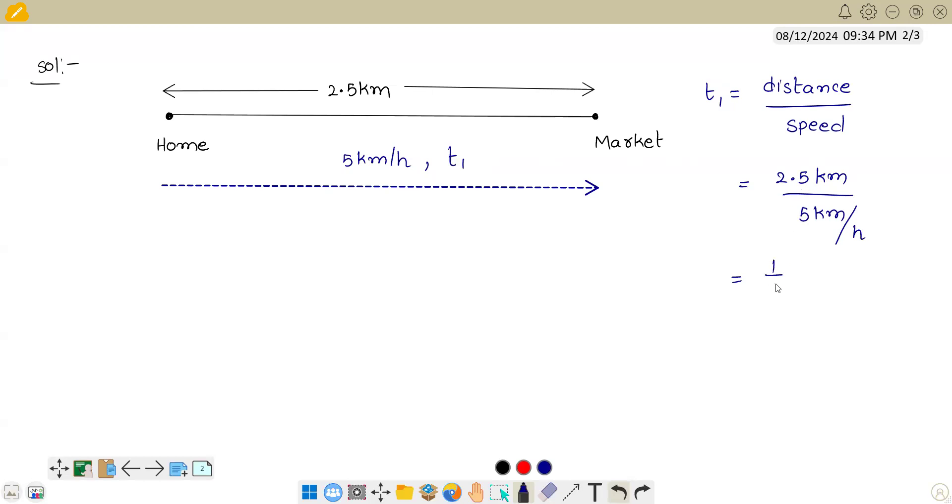So we will get 2.5 divided by 5. Kilometer would cancel, you will get 1/2 hour. 1/2 hour means 60 minutes, so 1/2 into 60 minutes, we finally get this as 30 minutes. We got the value of time required to complete this journey as 30 minutes.